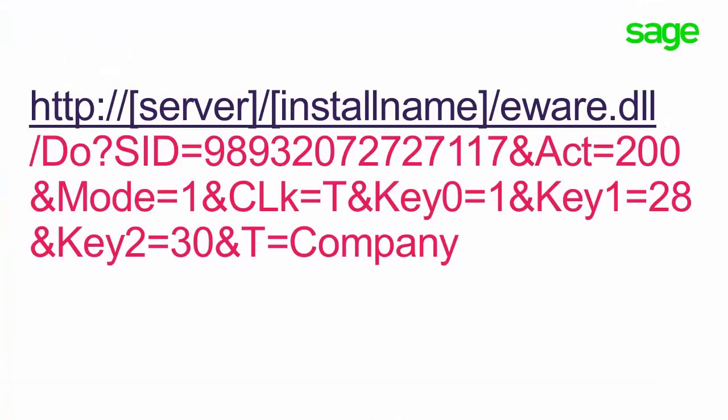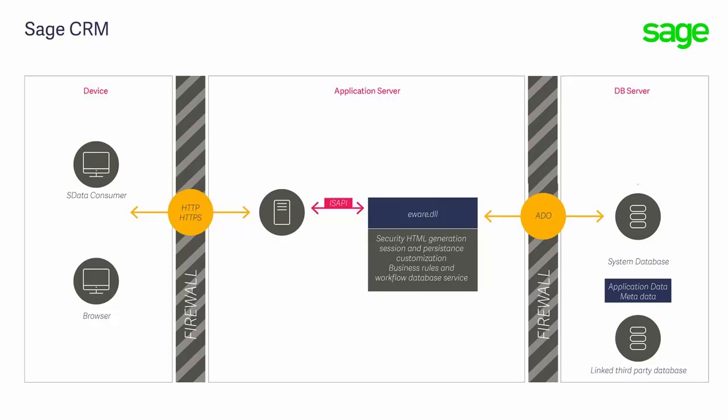You'll see that it is referencing something called eWare DLL. This image shows Sage CRM's architecture before the current evolution began — specifically what the design of Sage CRM 6.2 would have been. The eWare DLL is a 32-bit application written in a language called Delphi. The diagram shows how a request is sent from the browser, either over HTTP or HTTPS, to the eWare DLL that runs under IIS (Internet Information Services) web server.